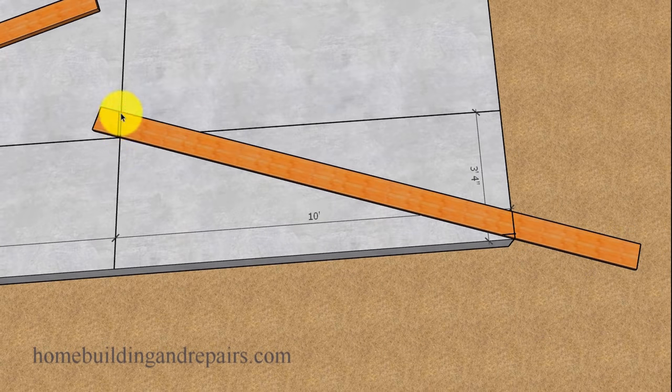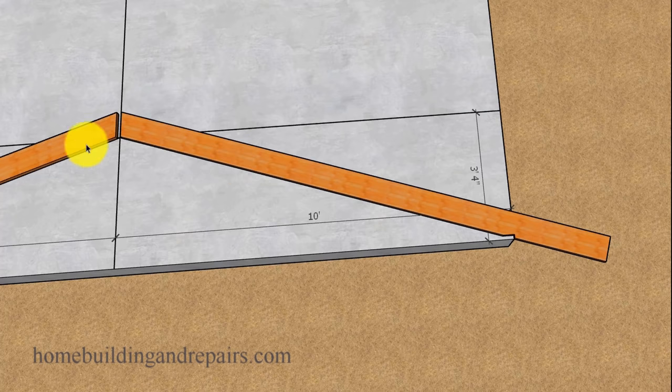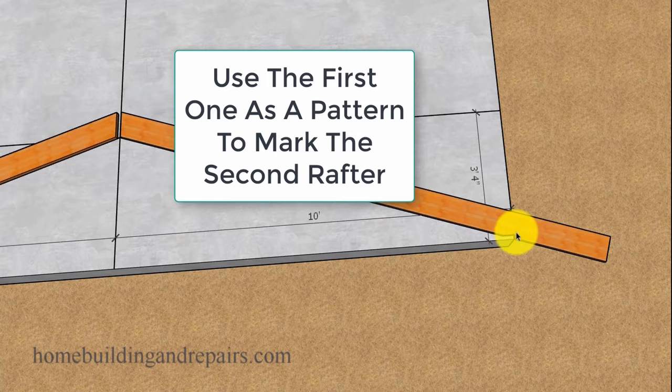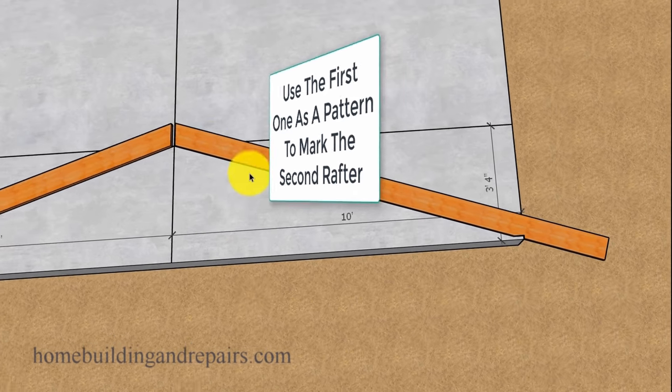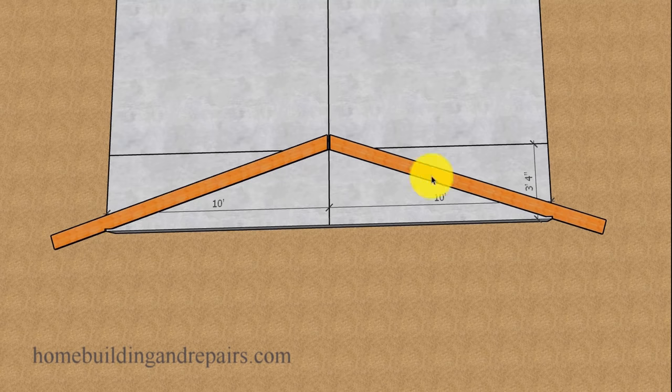You're going to cut the lines here like so. And then the rafter. There's no need to lay out two roof rafters. Take this roof rafter that you lay out. Cut another one exactly like it. And then flip that one over and position it on the other side.